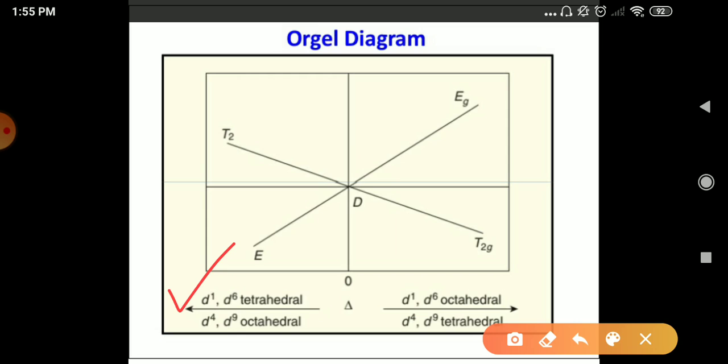And for D1 and D6 octahedral and D4 and D9 tetrahedral, the Orgel Diagram is same. Here you can see the energy level and this is a delta zero for octahedral.